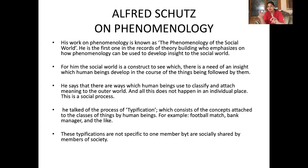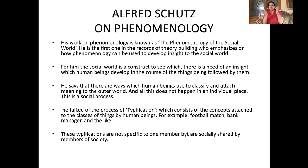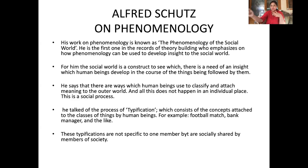Alfred Schutz says there are ways which human beings use to classify and attach meaning to the outer world. This is the main point where Schutz's theory stands. Phenomenology is meant to understand all the ways members of society use to classify things and attach meaning to the outer world. We classify things as our favorite or not, as something we feel happy or hurt with. What helps us classify are not individual factors, but our experiences, which are connected to other people in society.